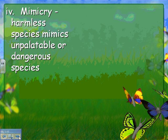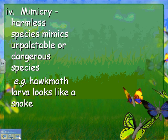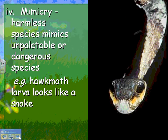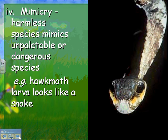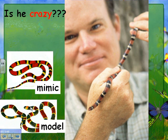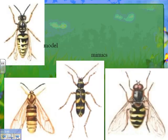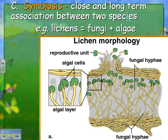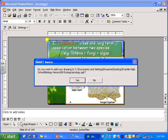Mimicry is when a harmless species mimics an unpalatable or dangerous species. For example, the hawk moth larva looks somewhat like a snake — scary enough to fend off a bird. Here's a snake that bites and is poisonous, and here is its mimic, which looks similar enough that predators avoid it. Similarly, here is a wasp that stings, and these are mimics that don't sting but look enough like the stinging kind that birds may avoid them.